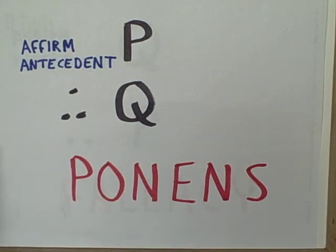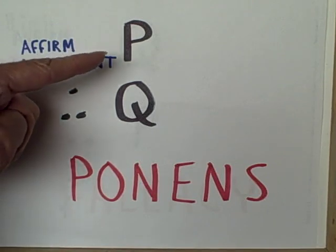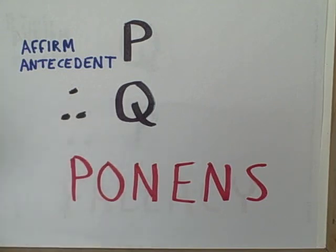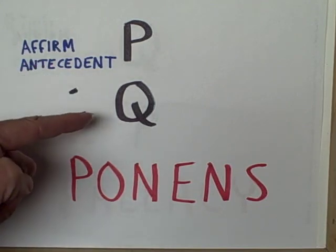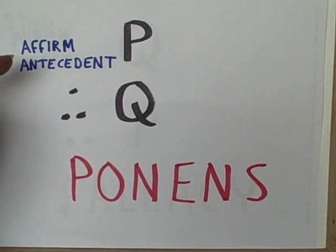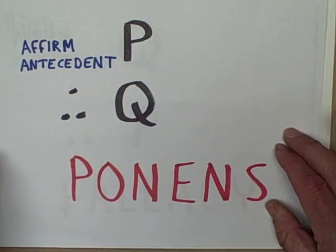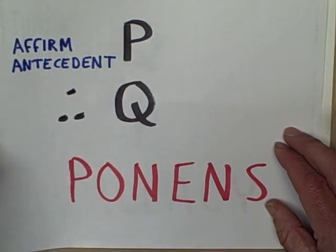It's possible to reason from a knowledge that P exists to a knowledge that Q exists, because if P, then Q. Here we are affirming the antecedent and therefore we know that the consequent also exists. This is known as the modus ponens, and it is correct reasoning.